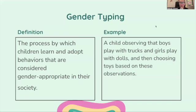Gender typing: the process by which children learn and adopt behaviors that are considered gender-appropriate in their society. For example, a child observing that boys play with trucks and girls play with dolls, and then choosing toys based on these observations.